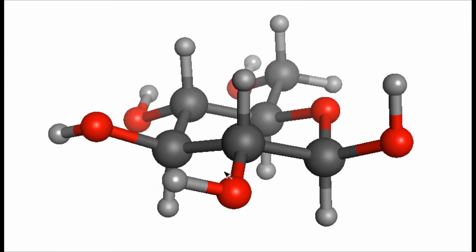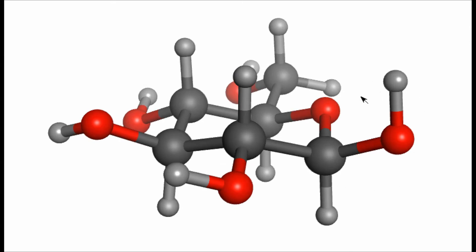In the alpha anomer, the OH group is swapped with the hydrogen, and the hydrogen takes the place of the OH group. The next phase of the video is going to show how this comes about by showing the open chain form of the sugar.